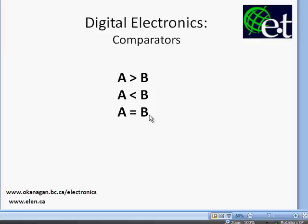Comparators are widely used because they're going to be part of an ALU, or arithmetic logic unit, in a CPU. A very fundamental operation is to compare two numbers. If you think about it, anytime you write software with an if statement, you're comparing two things - and the comparator is the logic circuit that does that.